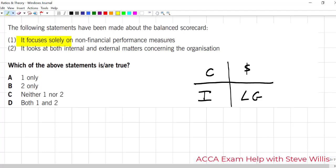First statement, it focuses solely on non-financial measures. That is incorrect. It also considers financial. It looks at both internal and external matters. That is true because it also looks at customers. So, that would be an external matter. Answer is B. Statement 2 is correct.